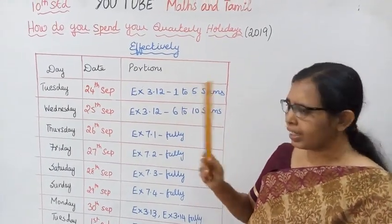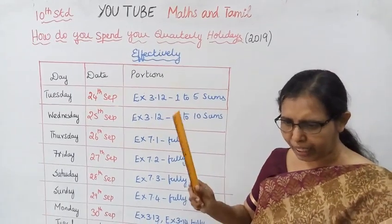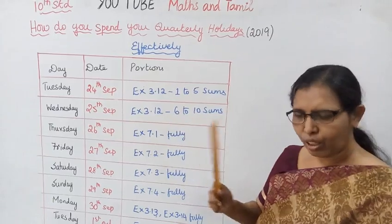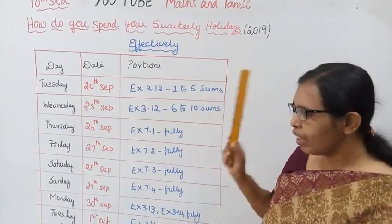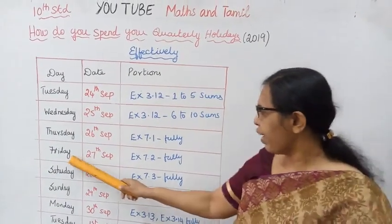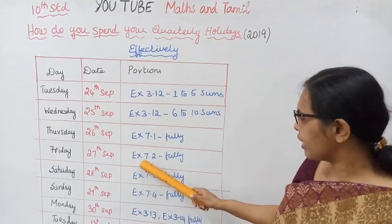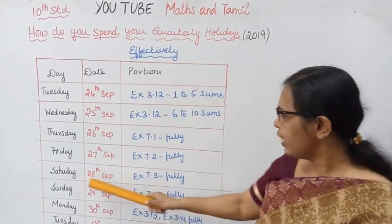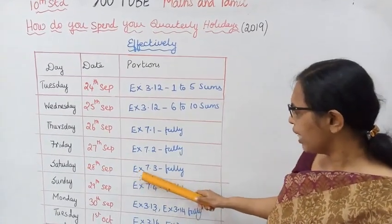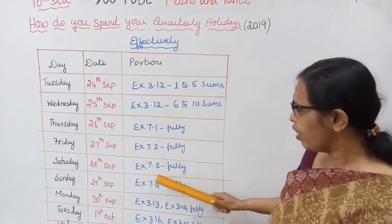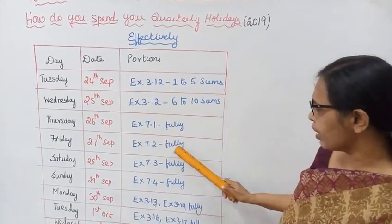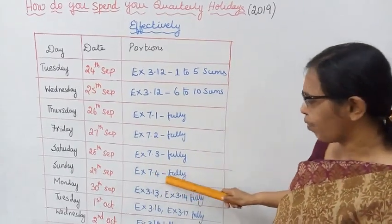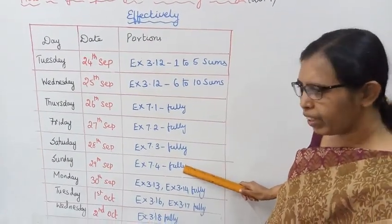You know the Max and Tamil playlist — search it and you will find 10th standard algebra and 10th standard mensuration new syllabus playlists. Friday 27th September: Exercise 7.2 fully. Saturday 28th September: Exercise 7.3 fully — about 8 sums. Sunday 29th September: Exercise 7.4 fully — about 8 sums.